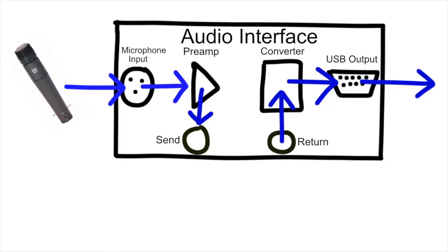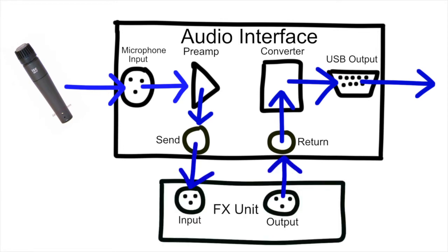The insert taps into the signal after it goes through the preamp and routes it to an output on the interface. You can take that signal from the output and plug it into the input of your compressor. Then on the output of the compressor, you take that signal and plug it into the send-return input of the interface. On a send return, you always have to have both the send — which sends the signal to the effects unit — and the return, which receives the signal back from the effects unit.